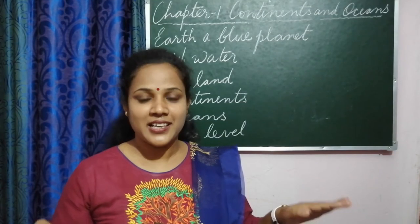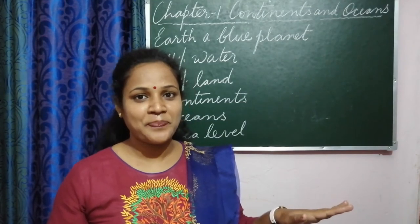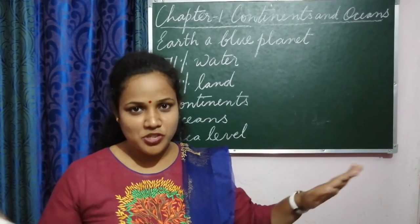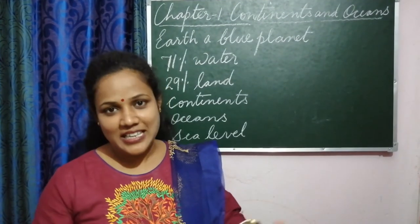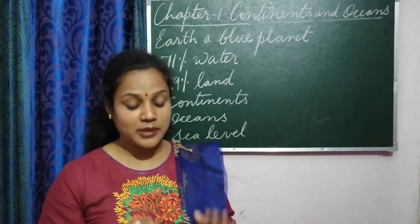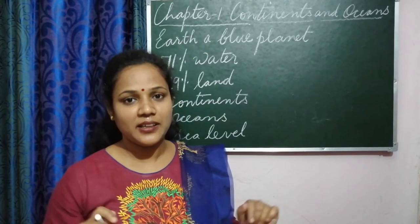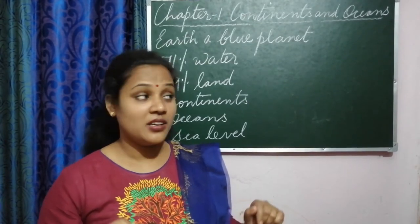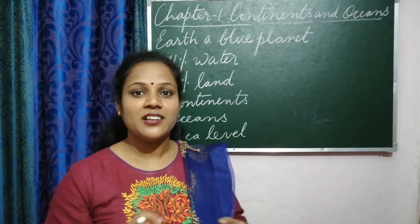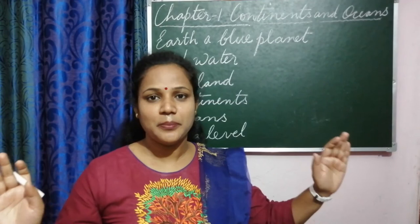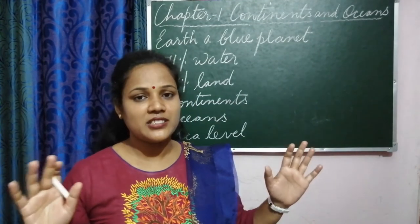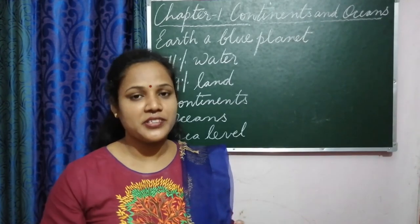The surface of ocean water is equal. All four oceans are interconnected and sea level is equal, that's why we measure height or depth of a place from the sea level. Now we are going to learn about the continents. Continents are the largest land masses. There are seven large land masses, and they are called the seven continents.